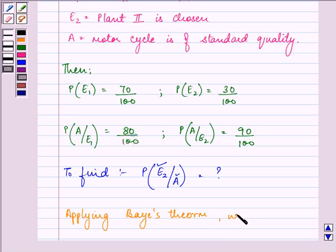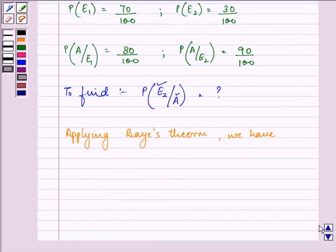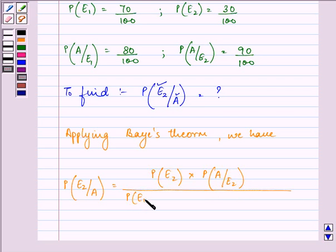we have P(E2|A), the probability of choosing plant 2 given a motorcycle of standard quality, equals P(E2) times P(A|E2) divided by the total probability, which is P(E1) times P(A|E1) plus P(E2) times P(A|E2). What we need to do further is substitute the values found above.